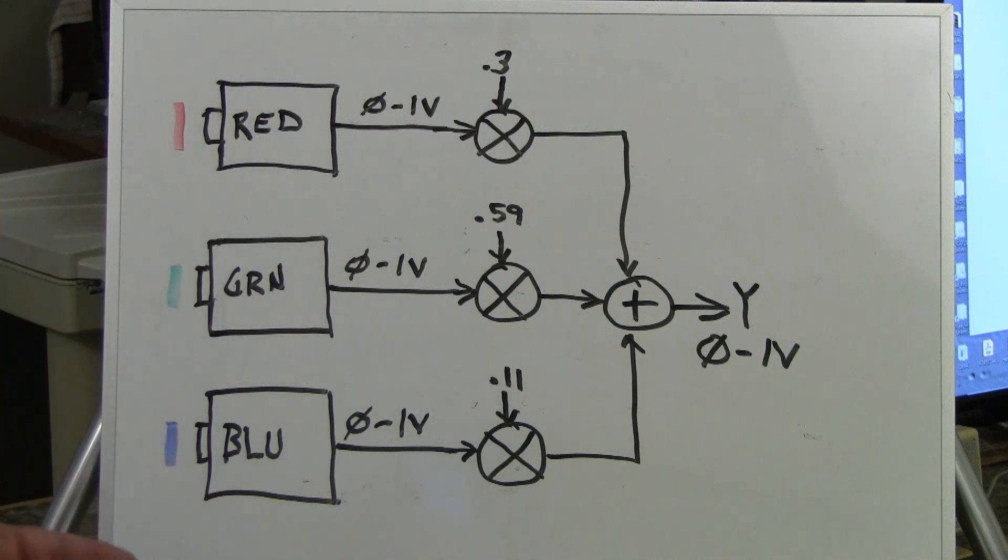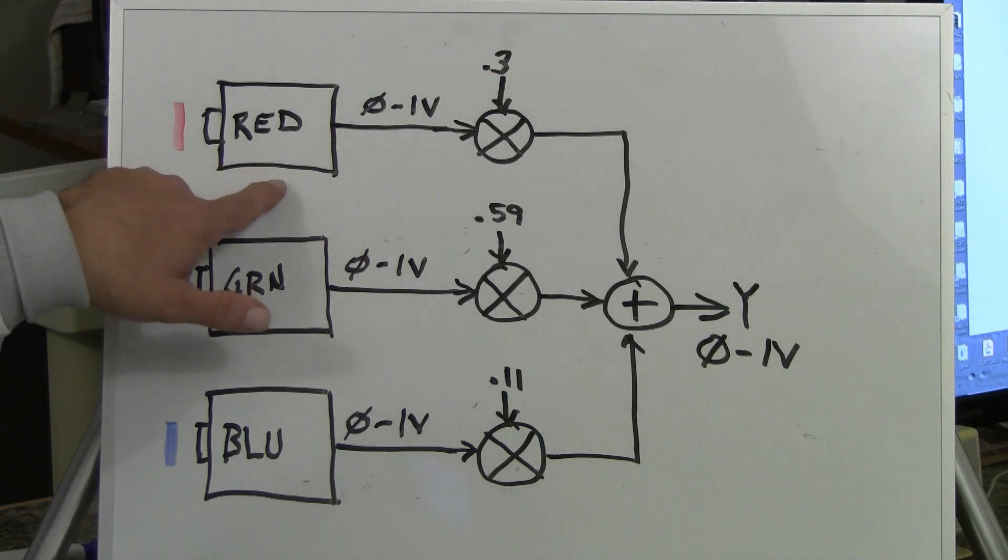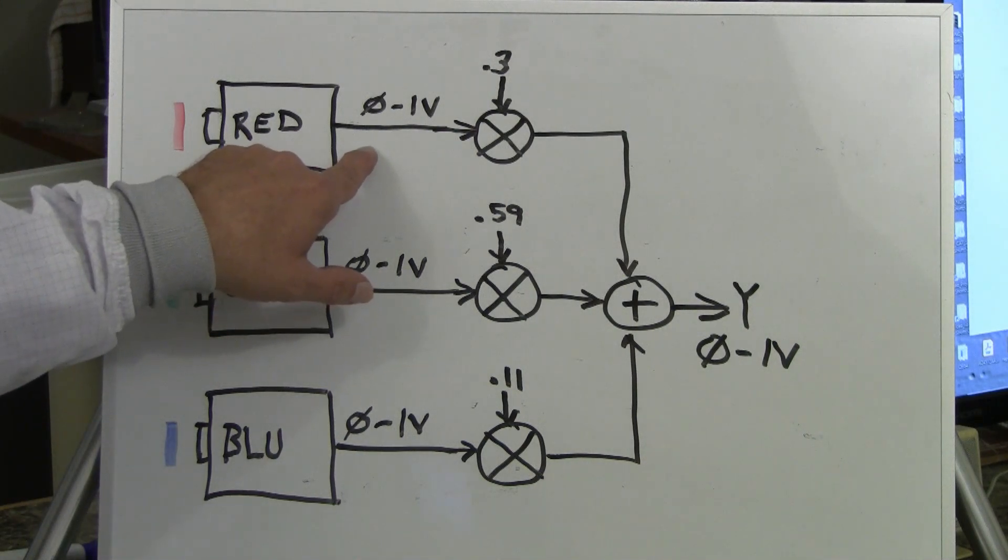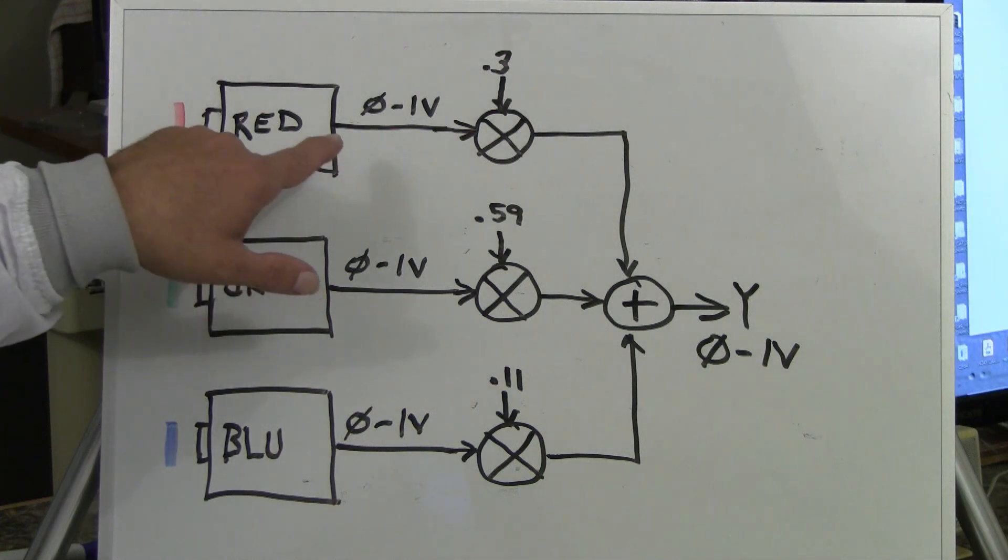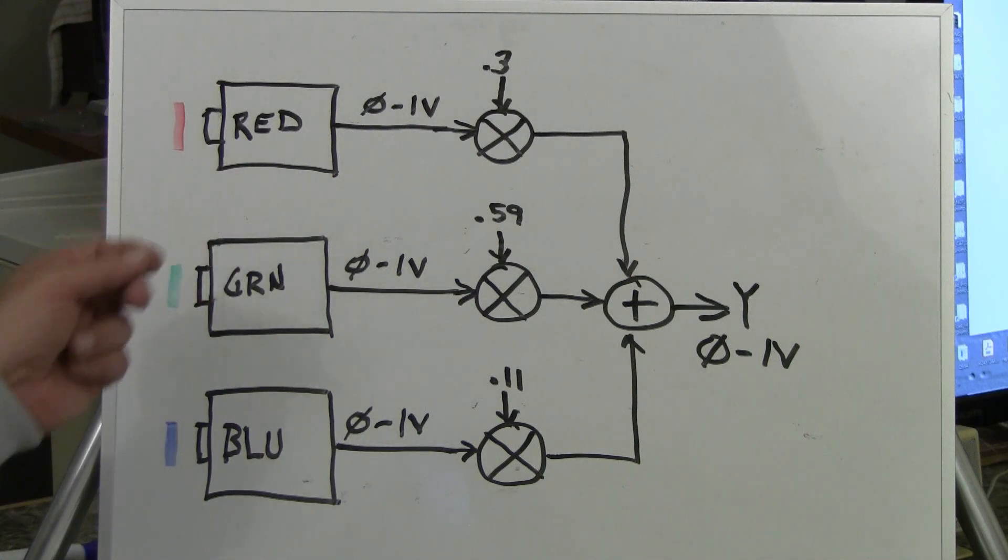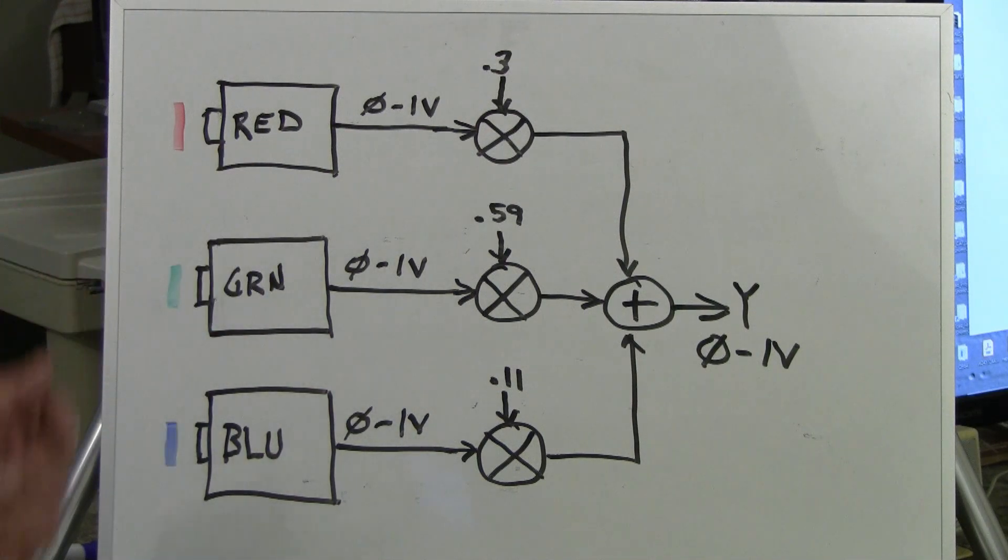So we start there. We have a color television camera which consists of essentially, literally, three black and white television cameras. There's an optical system that divides the image into three identical copies and passes them through red, green, and blue filters. Otherwise, these cameras produce black and white signals coming out. But each signal represents the amount of that color in the scene. The range, these are calibrated to produce zero to one volt. Zero volts is black. One volt is saturated white, like this background. And anything in between is a shade of gray. A very low voltage is a dark shade of gray, and a higher voltage is a brighter shade of gray.